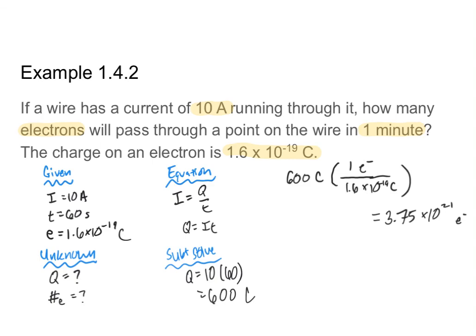That is a lot of electrons! But it's a pretty straightforward problem to solve. We used the current equation to find q, and then dimensional analysis — something many of you likely did a lot of in chemistry — to convert from coulombs to number of electrons.